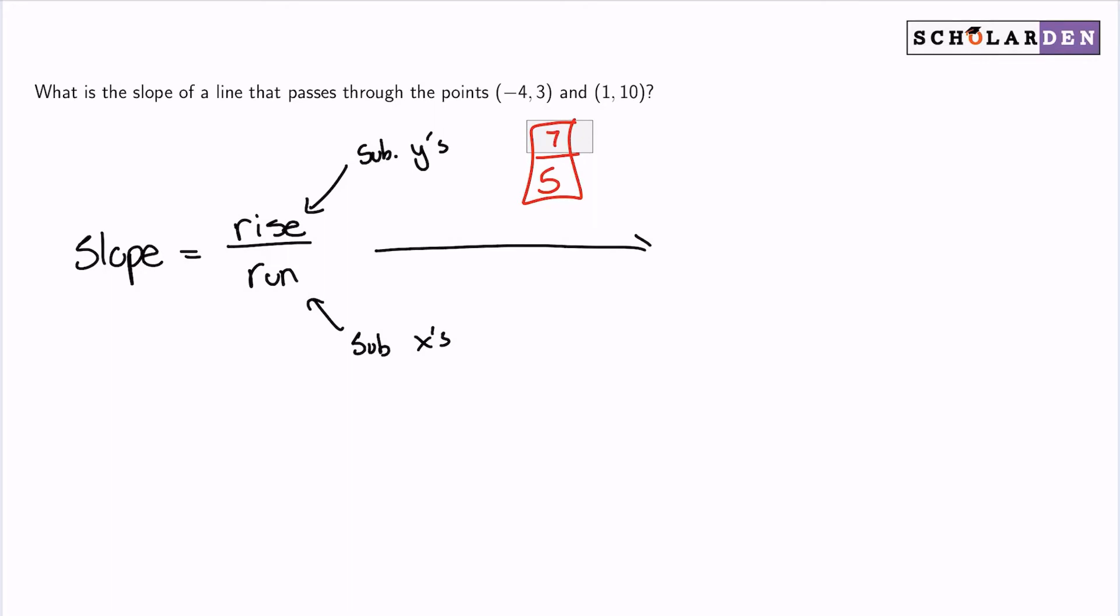So what we will receive, I will go ahead and do 3 minus 10. And then from here, I will commit to negative 4 minus 1.